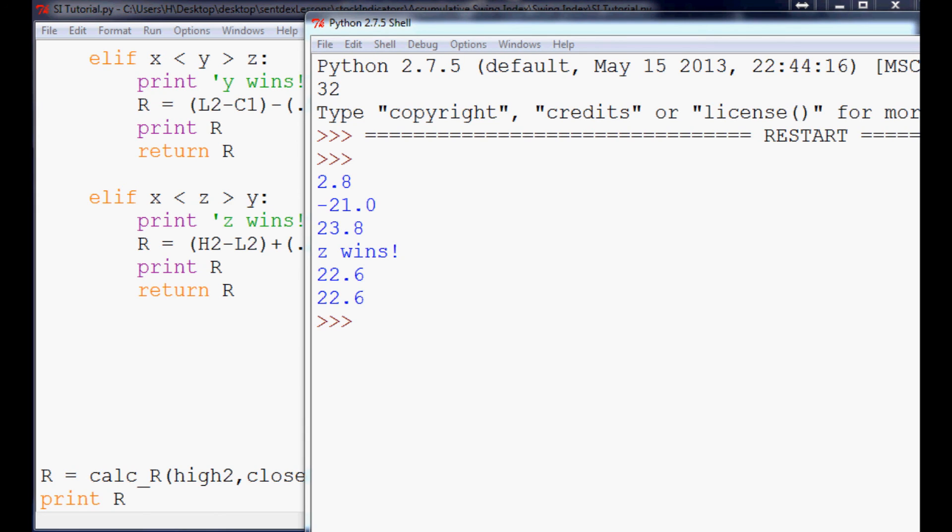So now that we've calculated R, the next variable that we have to calculate that has steps to it is K. Luckily, we did the hardest one first, which was R, since it had the most steps to it. So, probably the hardest part is complete. So, I'm going to go ahead and conclude the video here and continue on in the next video with the next steps to the swing index. As always, thanks for watching.